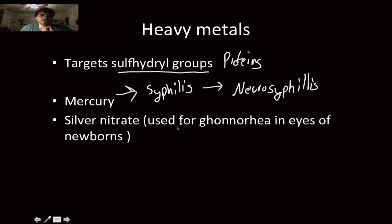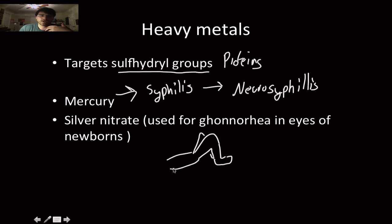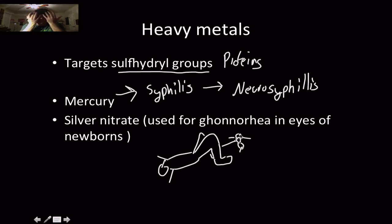There is also silver nitrate, which is used for gonorrhea infections in the eyes of newborns. As a baby passes through the birth canal, it comes in contact with mucosal and vaginal regions and can be exposed to gonorrhea. Before penicillin and antibiotic eye drops, silver nitrate was used to treat that.